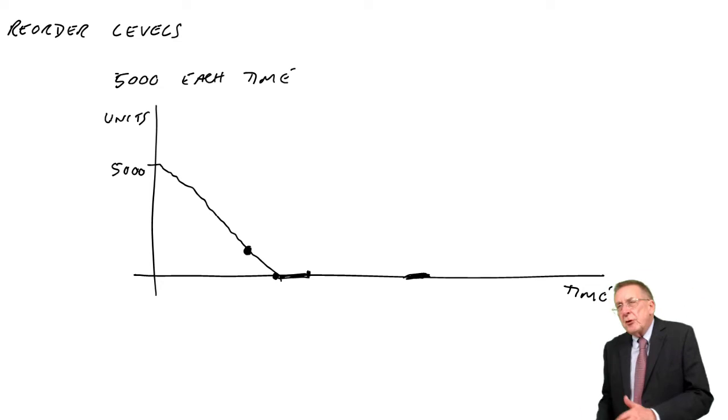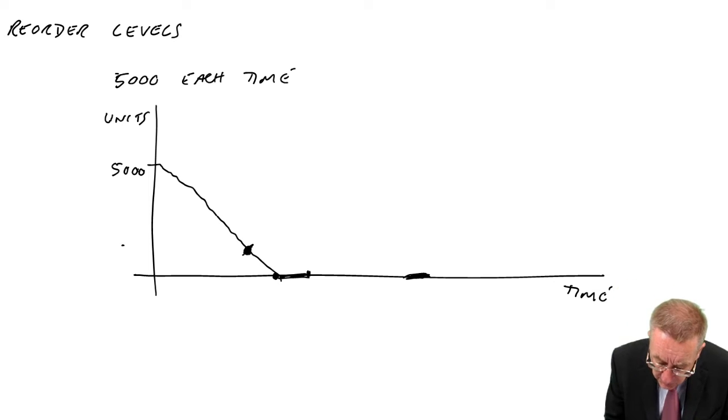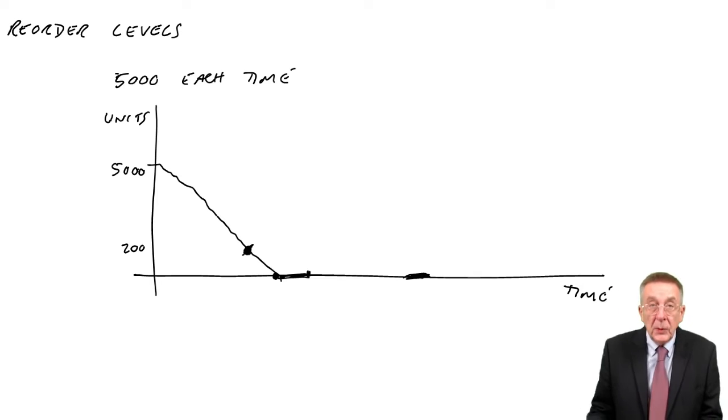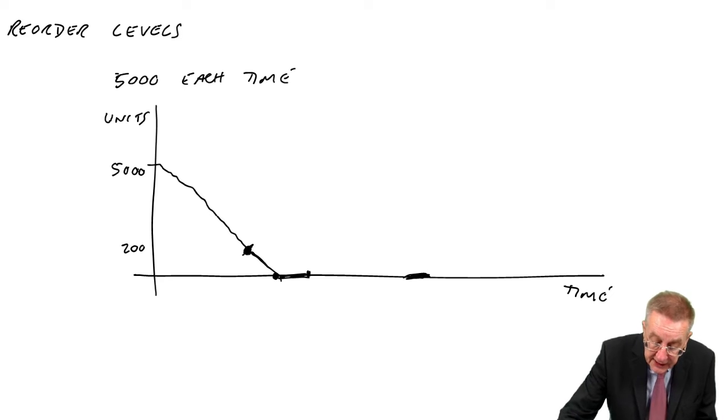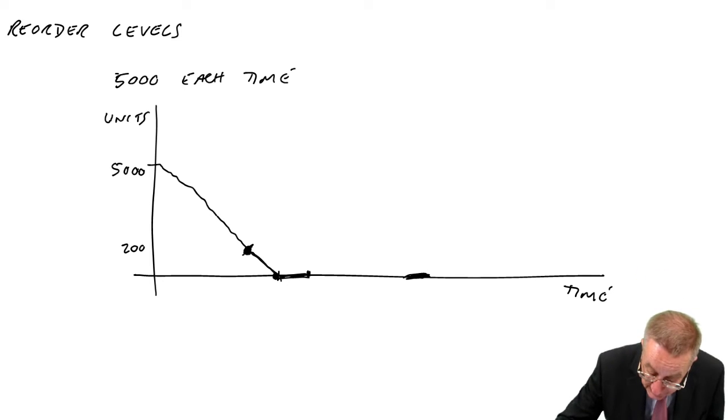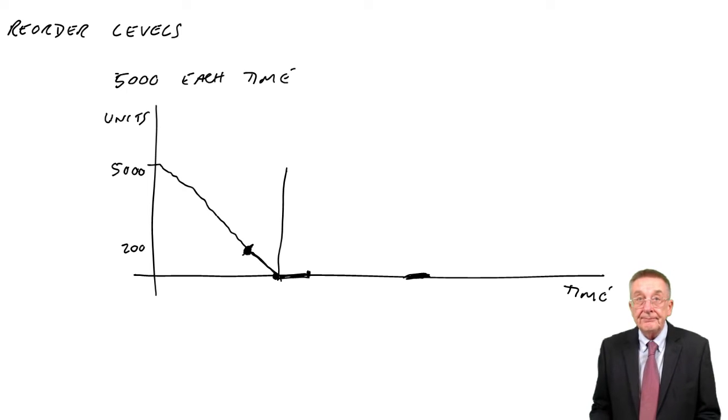In three days, customers are likely to want 200 units, let's say. So, let's place the order when there's still 200 units left. We've placed the order. Three days later, the inventory's dropped to zero. And immediately, the order comes in. So, that's what we're talking about.